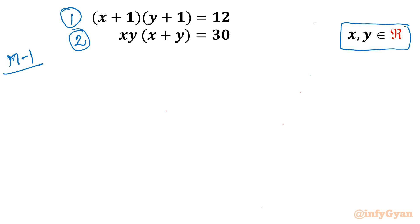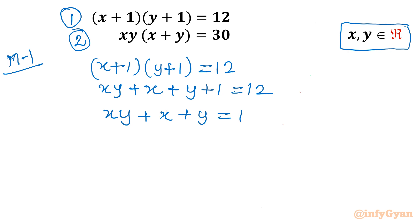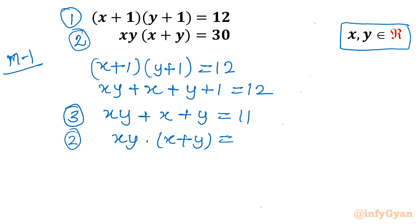I will begin with the very first equation: (x+1)(y+1) = 12. Let us expand: xy + x + y + 1 = 12. Taking away 1 from both sides gives us xy + x + y = 11. Let me call this equation 3. Now I will write equation number 2: xy(x+y) = 30.